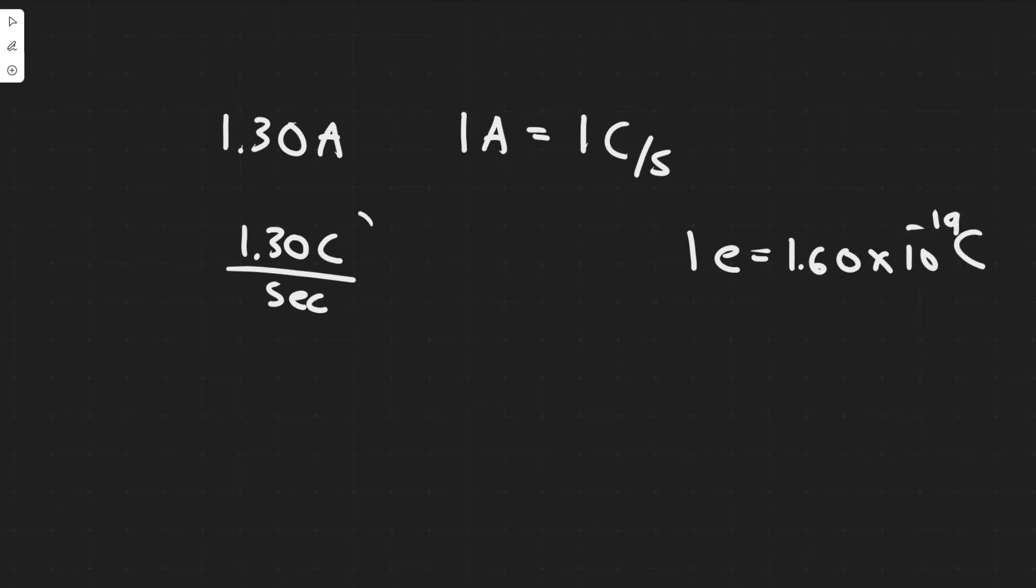This is the charge of an electron. If we want to convert this into electrons, notice this is on top so we have to put it on the bottom. So we have 1.60 times 10 to the minus 19 coulombs equals 1 electron.